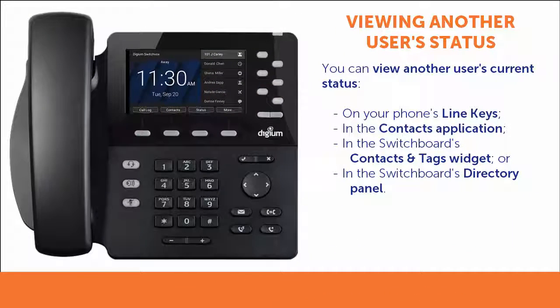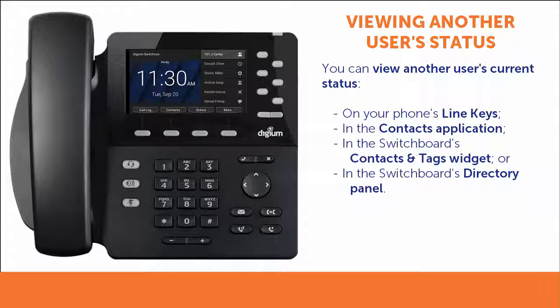You can see the current status of others on your phone's line keys, in the contacts application, or in the switchboard in either the contacts and tags widget or in the directory panel.